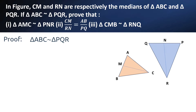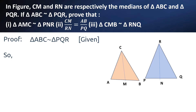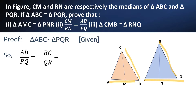We are given that triangle ABC is similar to triangle PQR. We can write the ratios of corresponding sides which are equal. Let us reposition the figure so that we can write the ratios very easily. AB by PQ is equal to BC by QR is equal to CA by PR. Let this be equation 1.